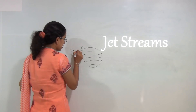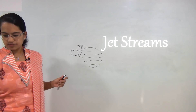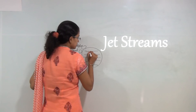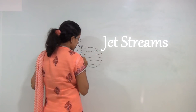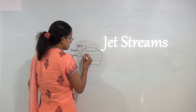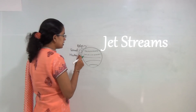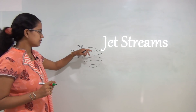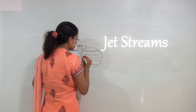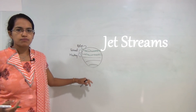What is interesting to note is that jet streams are formed at the boundaries of the three cell model — the Hadley cell, Ferrel cell, and polar cell. So you would have one jet stream running at one boundary and another jet stream at the other boundary, and similarly in the south.